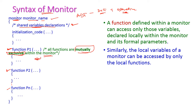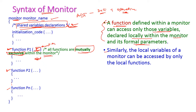Inside the function we use the monitor variables as well as the formal parameters. A function defined within the monitor can access only those variables declared locally within the monitor and the formal parameters. The local variables of a monitor can be accessed only by the local functions — function P1, P2, up to function Pn — so these variables are available only for functions within the monitor.